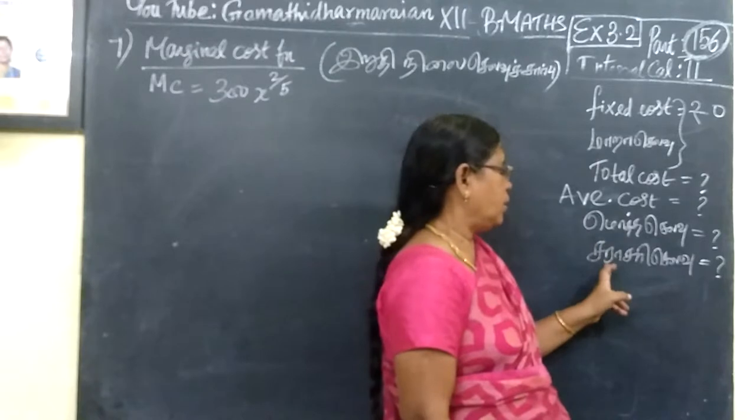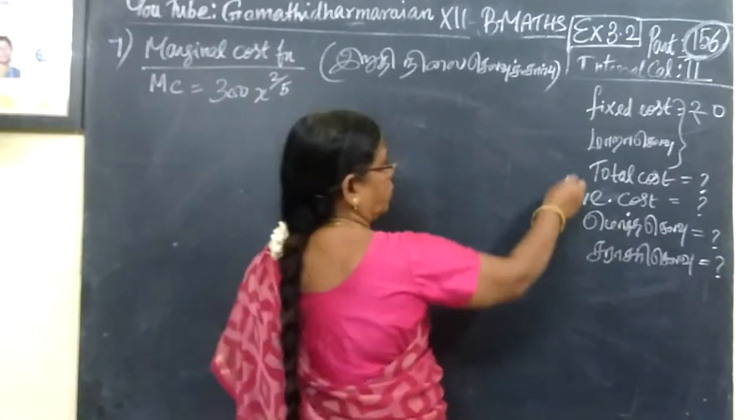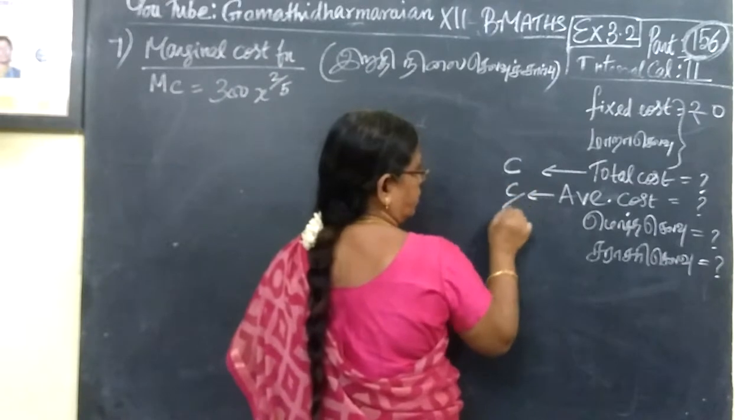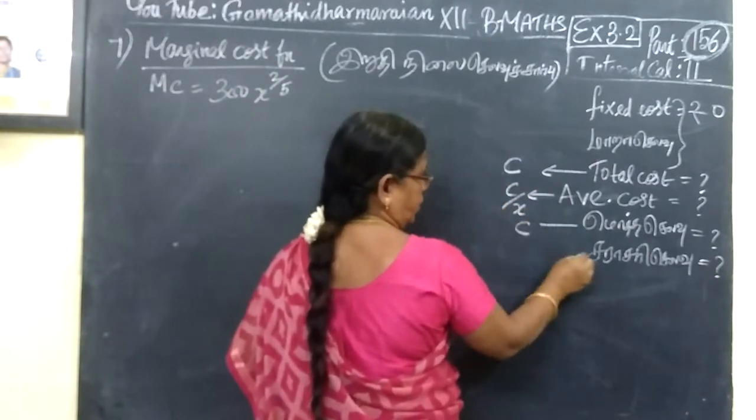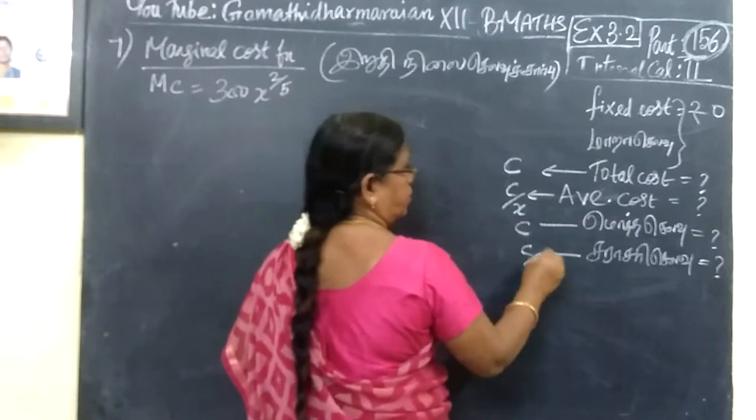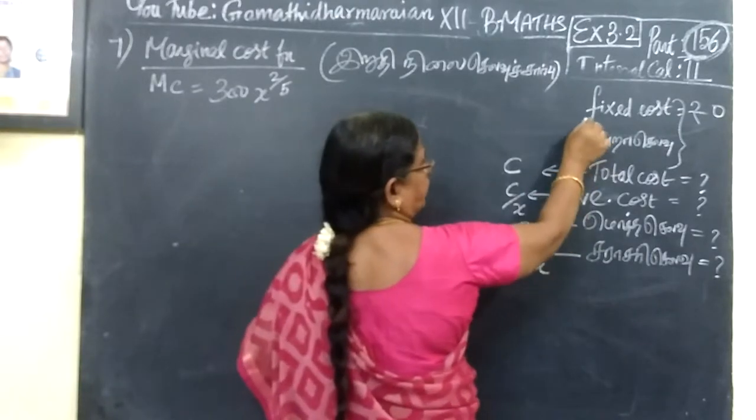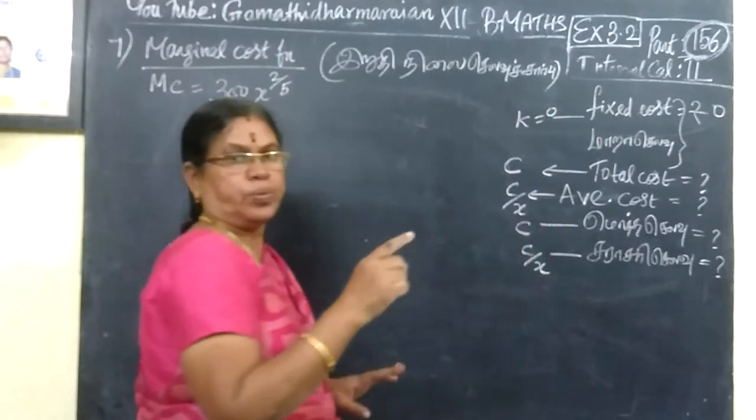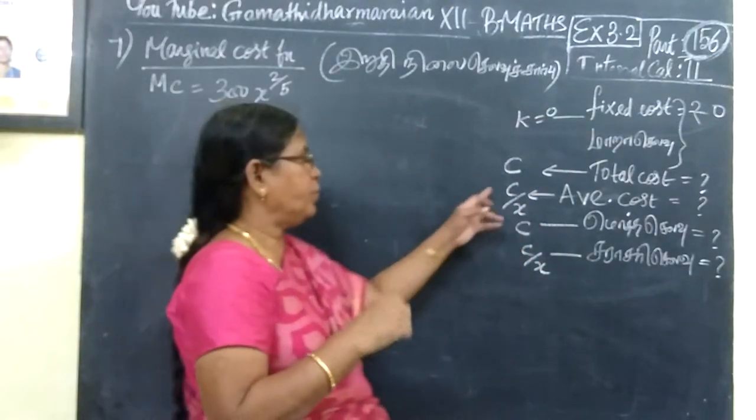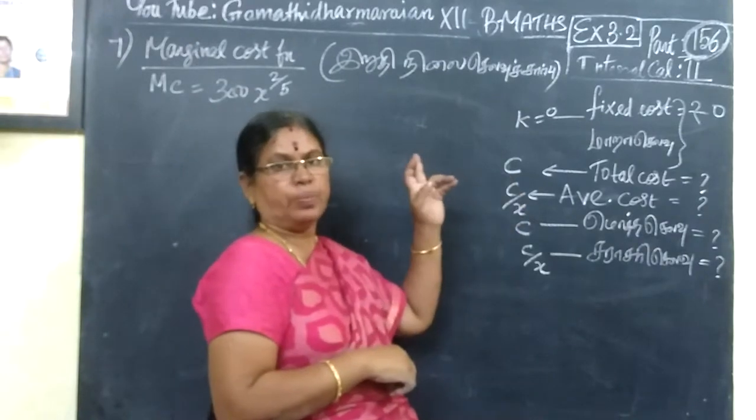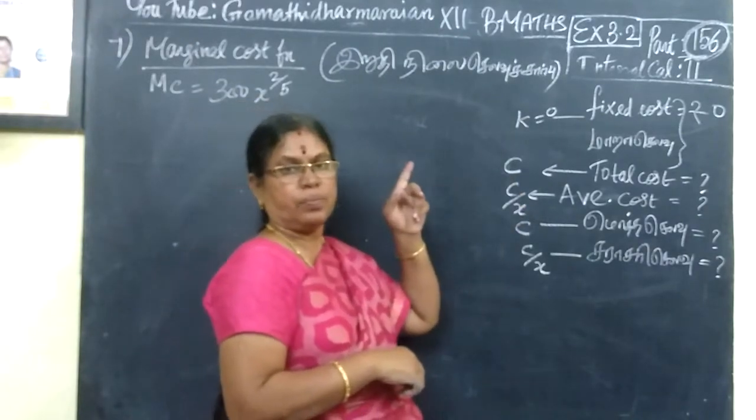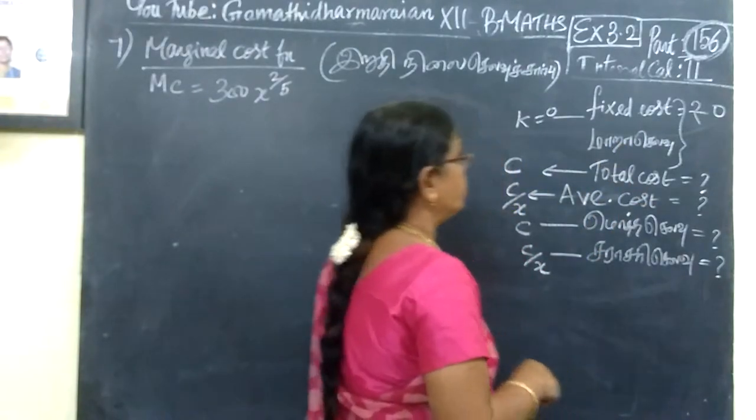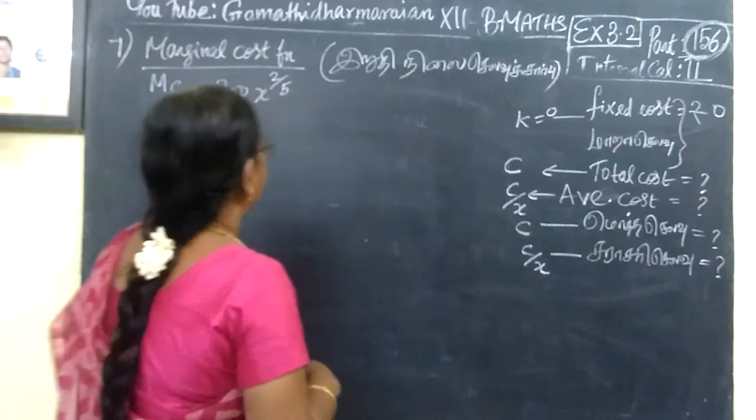Total cost is C, and average cost is C by X. So, fixed cost is 0.